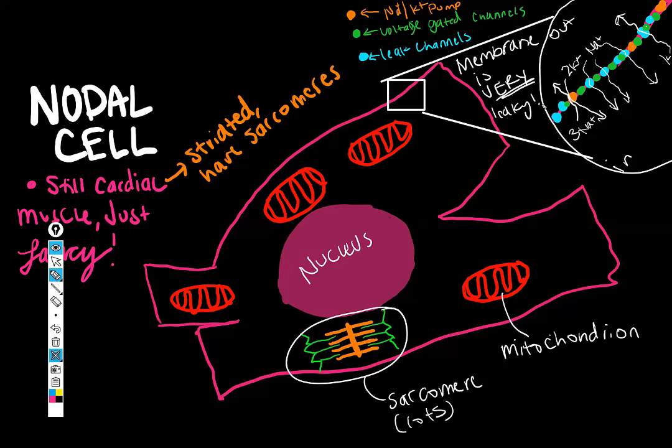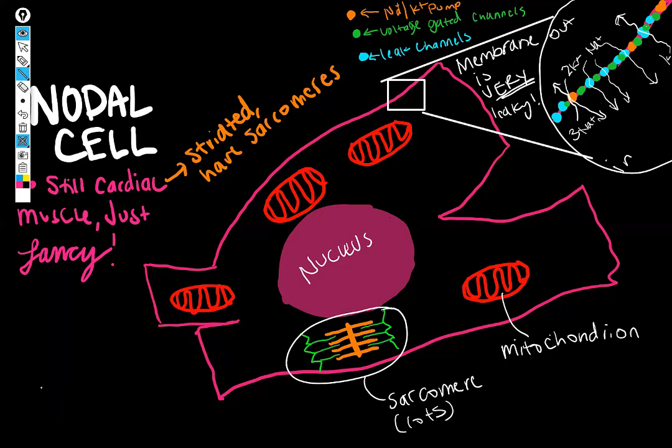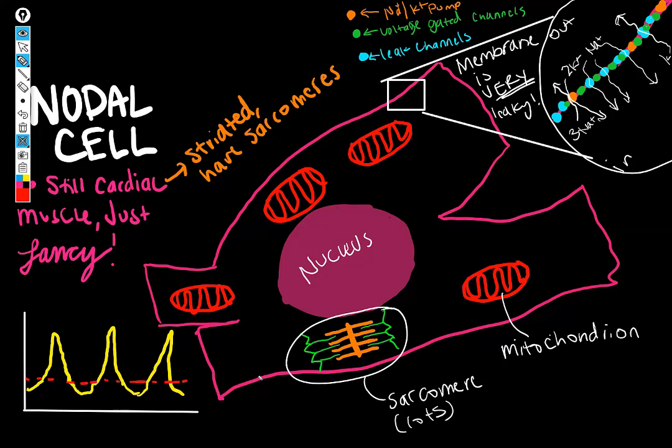Lots and lots of leak channels facilitate this constant drift towards threshold. And let's draw that, too. Just down here to remind ourselves what this potential looks like. And then we will erase this and move on to a zoomed out view where we'll start to discuss the nodal system as a whole. But the kind of potential that this cell makes, I think it's good to draw. Where red is threshold. So the leak channels are just constantly causing this membrane to drift back towards threshold and depolarize repeatedly. And that is what gives the cell the attribute that we call automaticity.